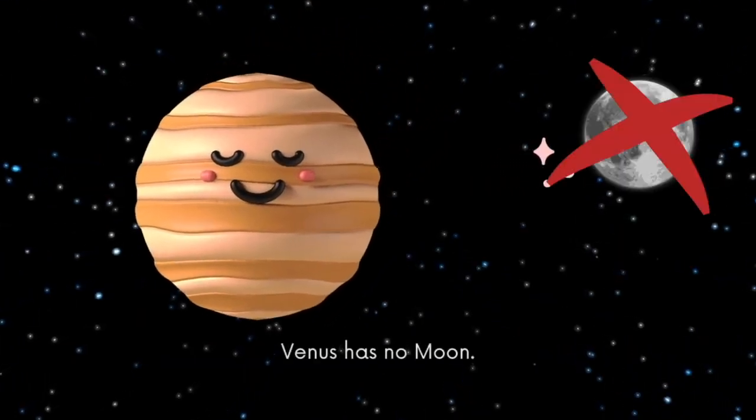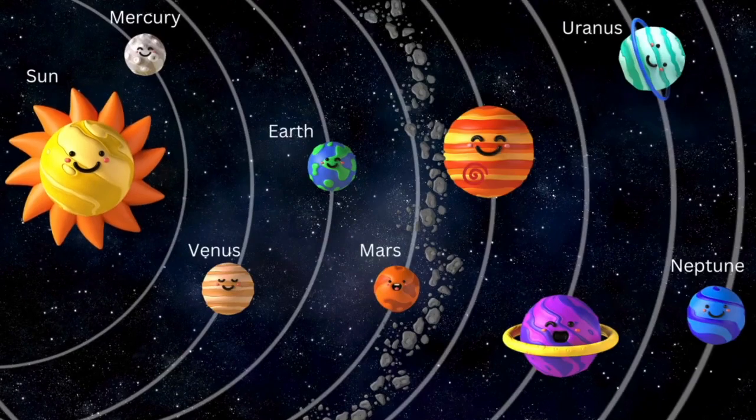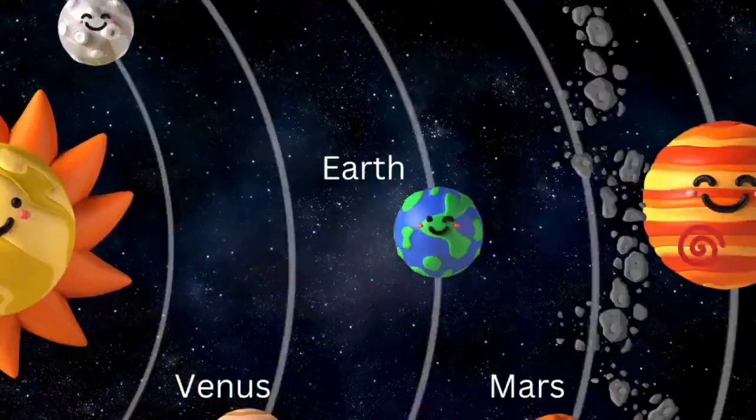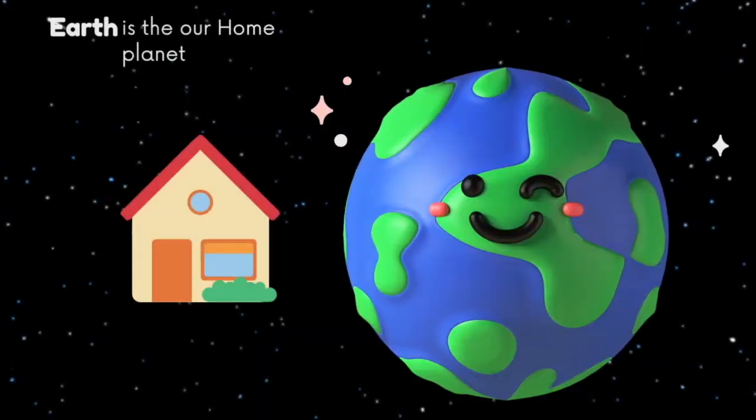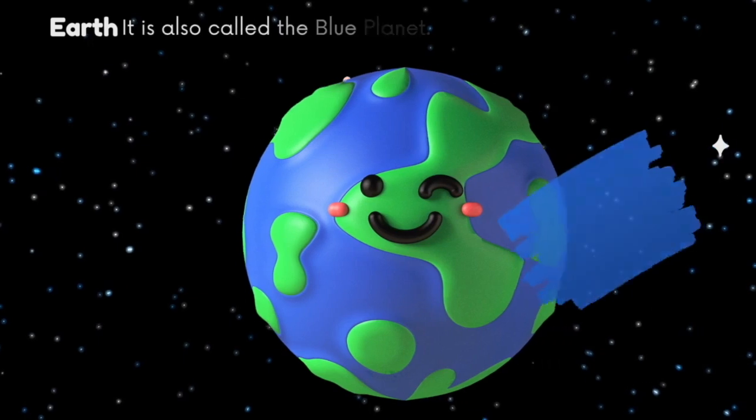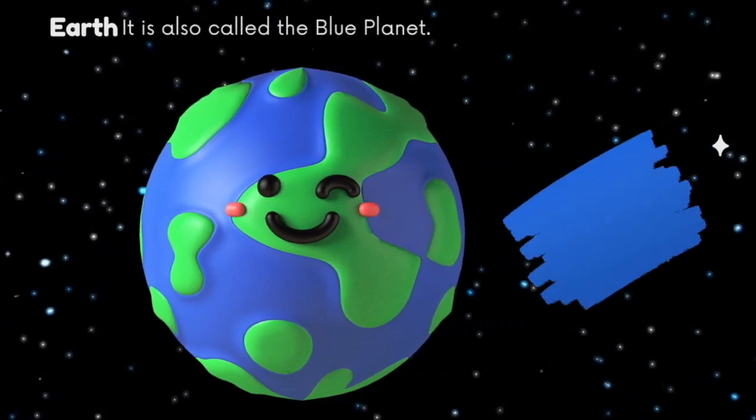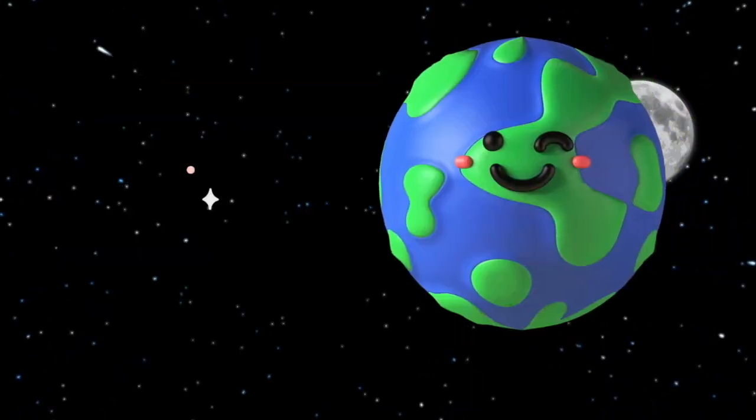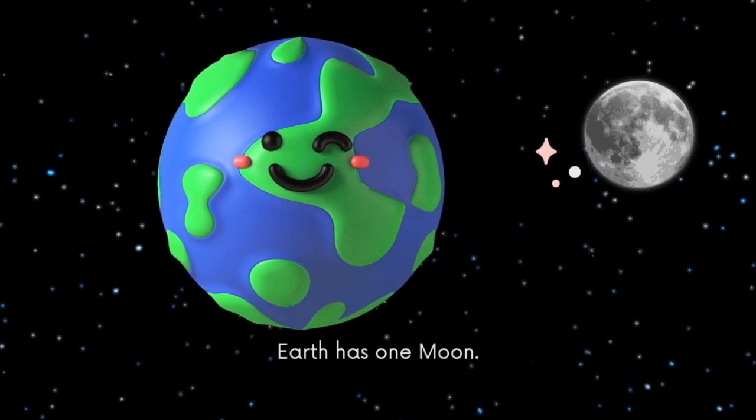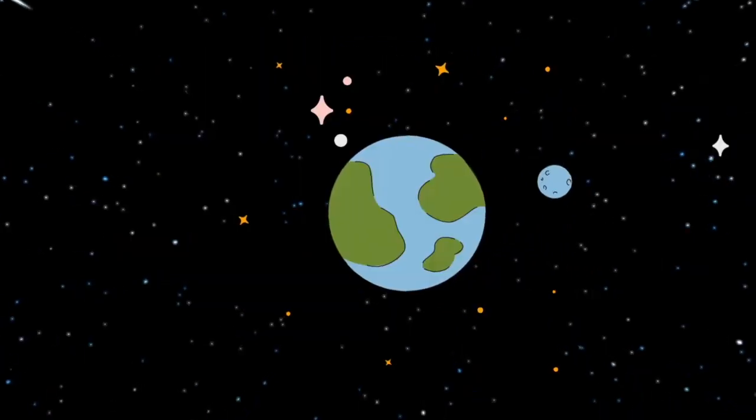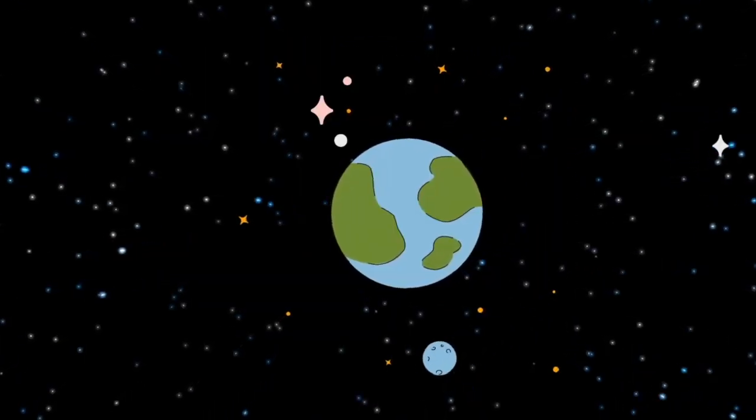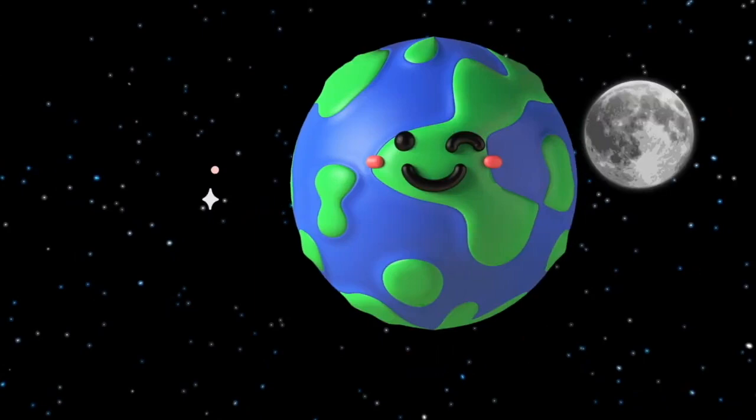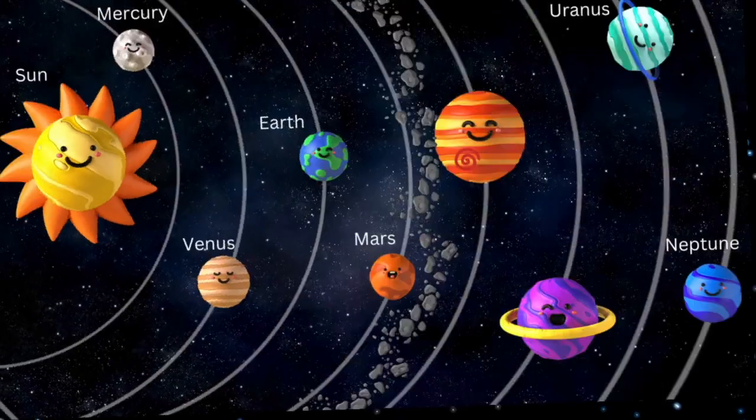Now we will take a look at Earth, my favorite planet, because this is our home planet. It is also called the blue planet because of all the oceans. Earth has one moon which goes around the Earth just like this, and we can see the moon during the night time.